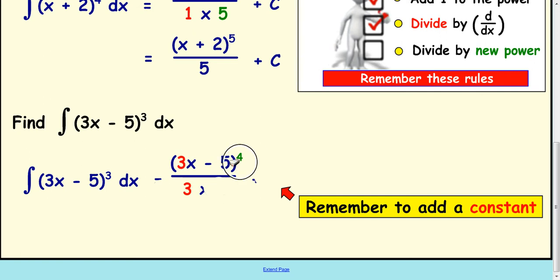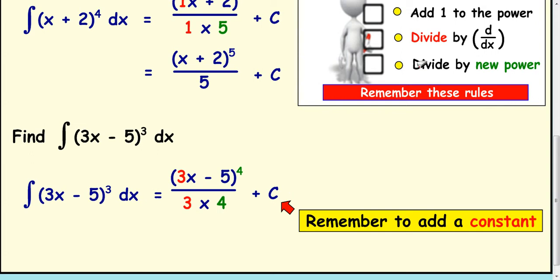We'll do that here. Divide by the new power and also the derivative of 3x minus 5, which is 3. And that's in the bottom line. So you're going to get 3 times 4 plus c. So we'll follow these rules here. We've added 1 to the power to get 4. We've divided by the derivative and also by the new power. The bottom line is going to be 12 there.